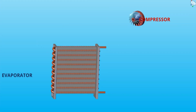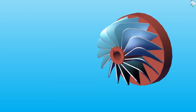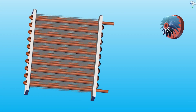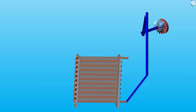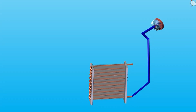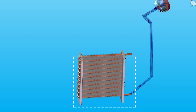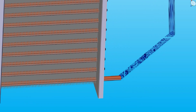The evaporator and compressor are connected by a refrigerant pipe, and the compressor inlet is at that connection. Refrigerant vapor circulates from the evaporator to the compressor. Since the compressor sucks the refrigerant vapor, there is a low pressure within the evaporator, and this helps to increase the evaporation process in the evaporator.